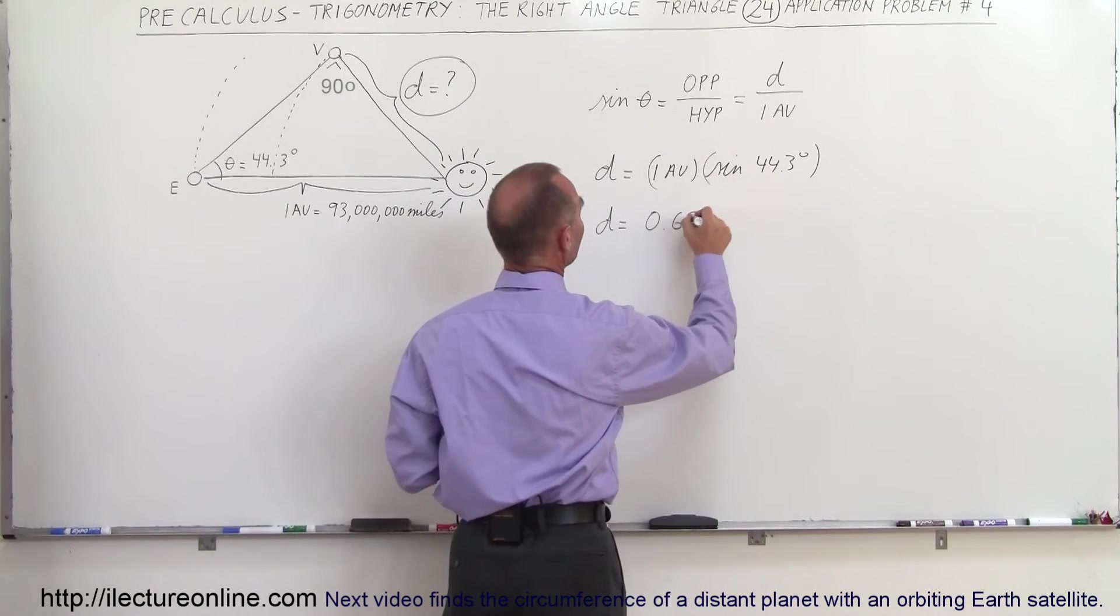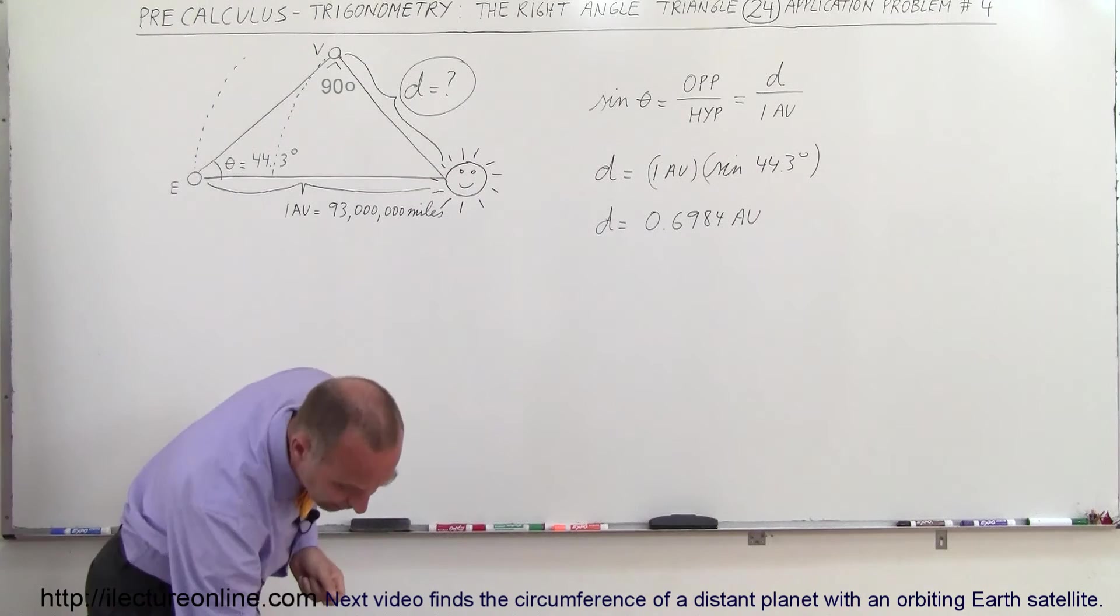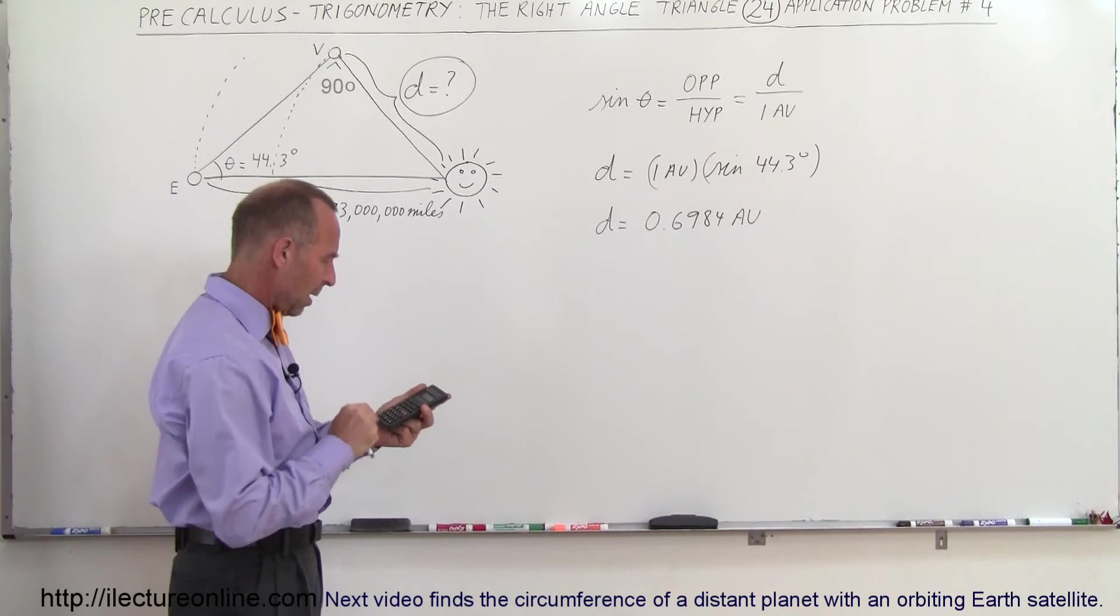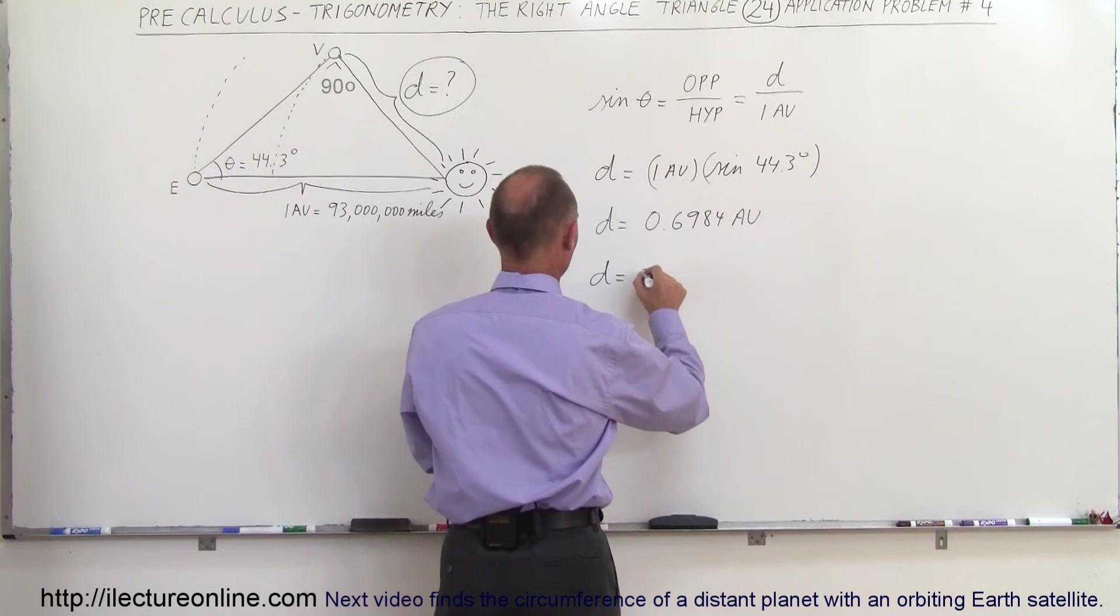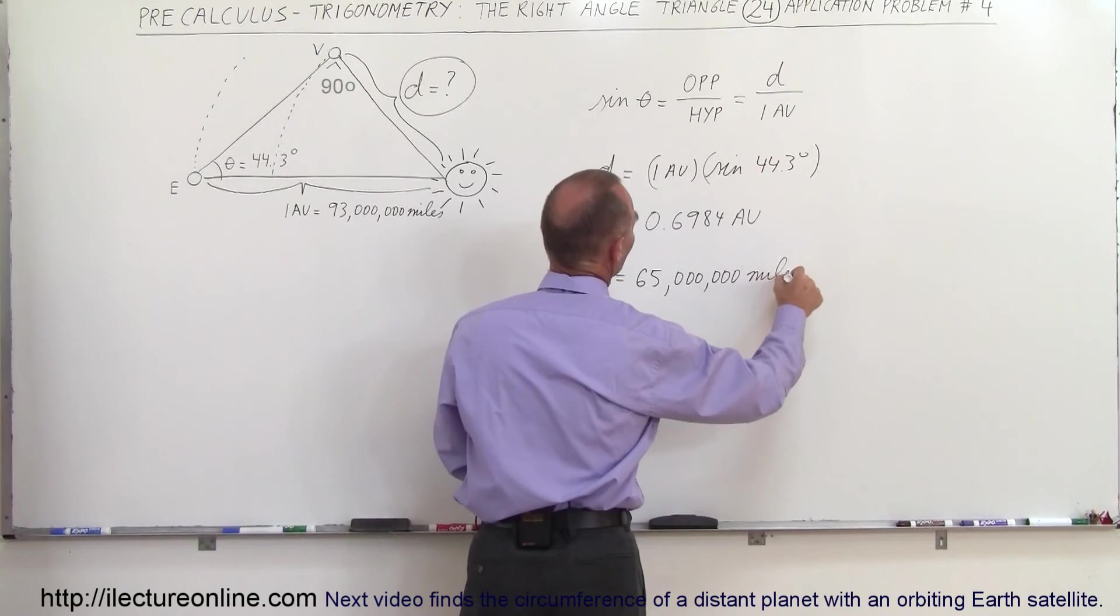If we now multiply that times 93 million, we get the answer in miles. So times 93 and we get 64.95 or 65, so therefore d is equal to about 65 million miles for the distance between Venus and the Sun.